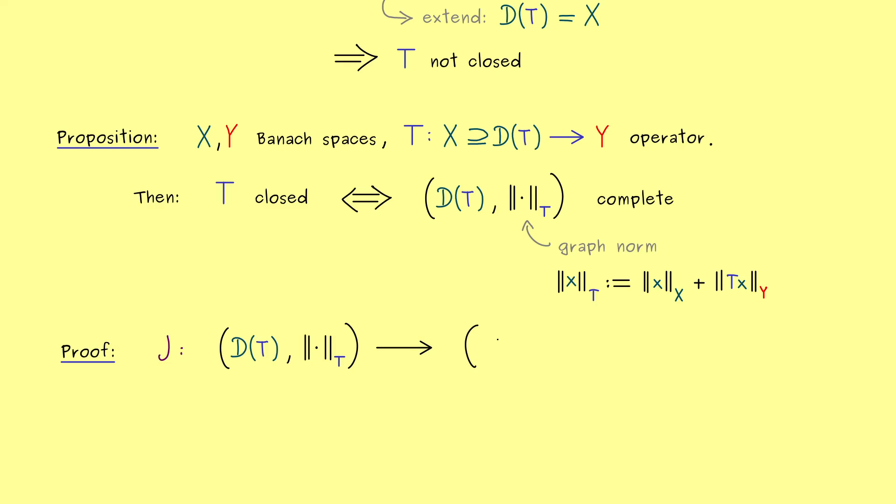And now I have already said it, we map this space into the graph of T. And there you might remember this one we have denoted by G with index T. And the norm there should be just the induced norm from the cartesian product. So the norm of x times y which is just the sum of both old norms.